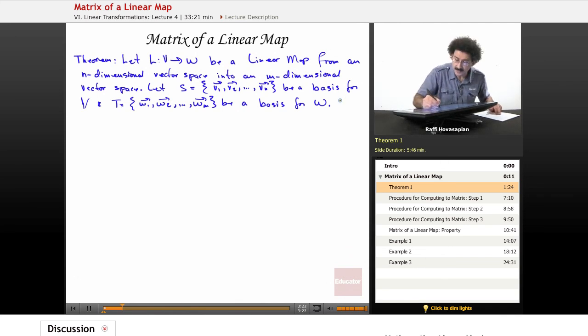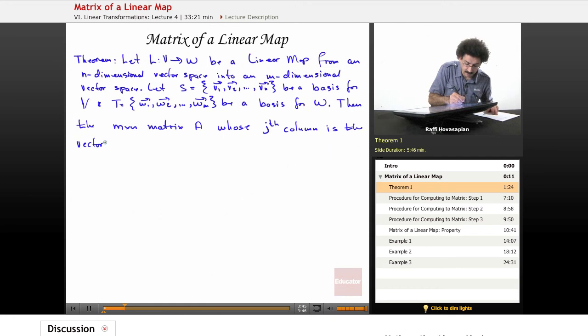Then, the M by N matrix A, whose Jth column is the vector L of V sub J, the coordinate vector with respect to T.